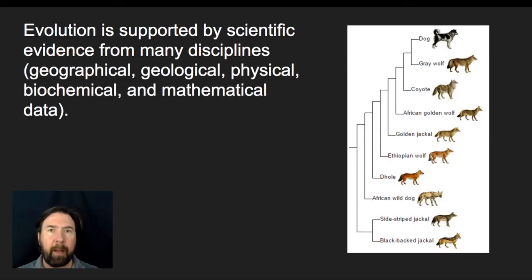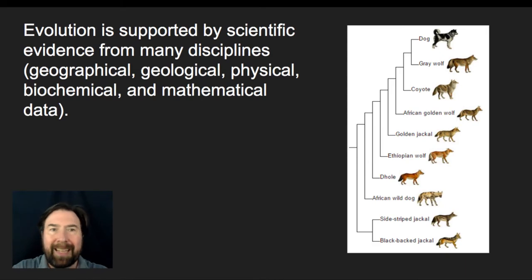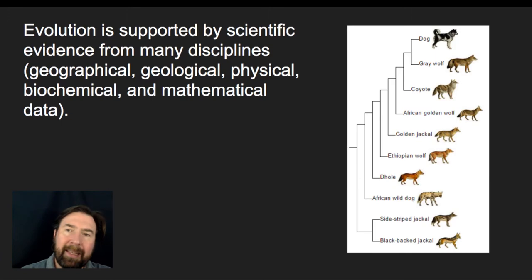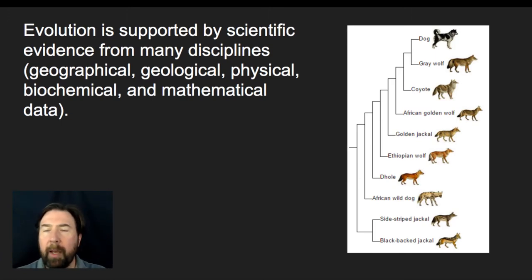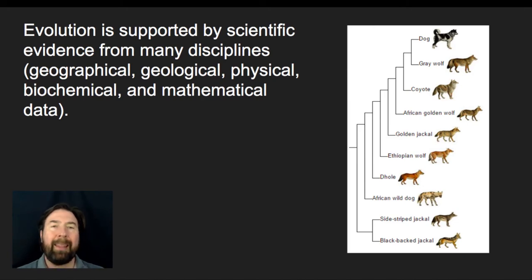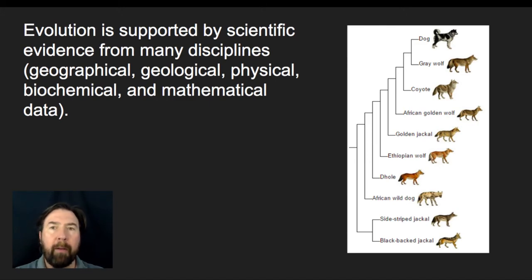Evolution is supported by scientific evidence from many disciplines. This is a really good example of how science works: when you come up with a theory — and evolution is a theory — it unifies a broad swath of observations and a broad swath of fields.